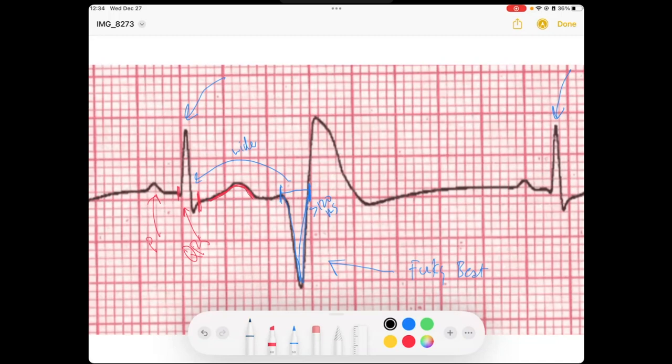You can notice that if you measure from this normal beat to the next normal beat, we would expect our next beat to occur right around here. However, this is occurring premature. And so let's evaluate that premature beat.